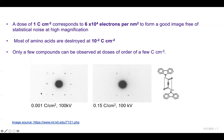Here is a polymer sample at 100 kilo electron volts at extremely low electron dose. As the dose is increased, you can see the sample gets damaged. This is a nice example of how electron dose and beam damage affects samples.